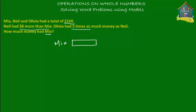Then how much will Neil have? Well, Neil has got $8 more than Mia. So obviously his bar or his block is going to be a little longer than Mia's block. This part here is the difference in Neil's and Mia's money, so that is equal to $8. Because we know that Neil has got $8 more than Mia, or Mia has got $8 less than Neil. So this block is equal to $8, the difference.